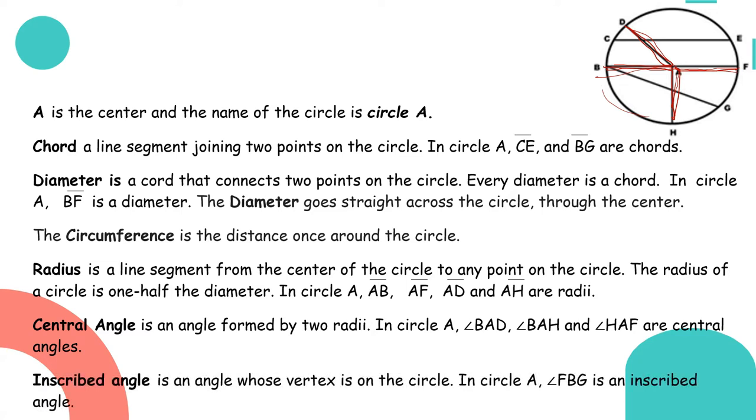Next, an inscribed angle is an angle whose vertex is on the circle. In circle A, FBG is an inscribed angle. So when the vertex is outside and not at the center, like angle FBG, there it is, outside. This is the vertex. It creates an angle on the circle. That's called an inscribed angle. So let us focus on this figure. Our diameter is the whole line, right? Half of it is the radius.